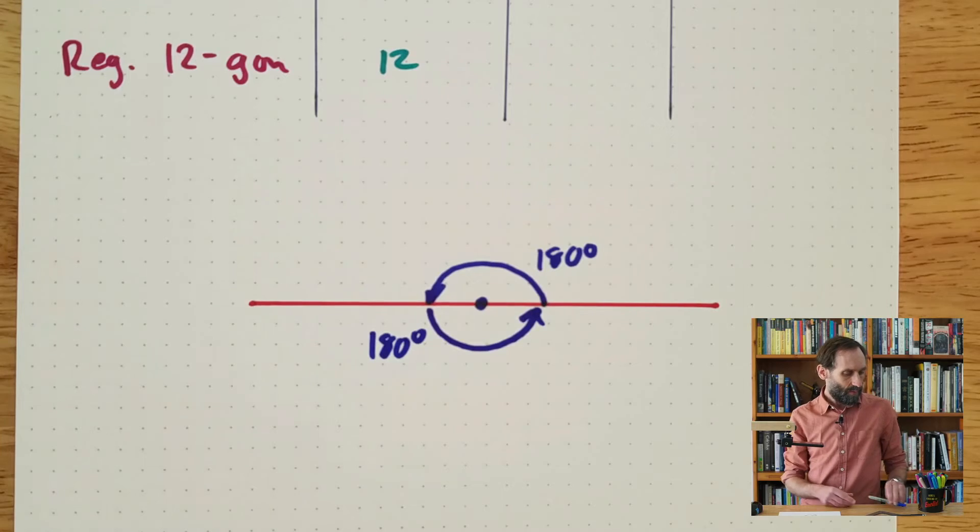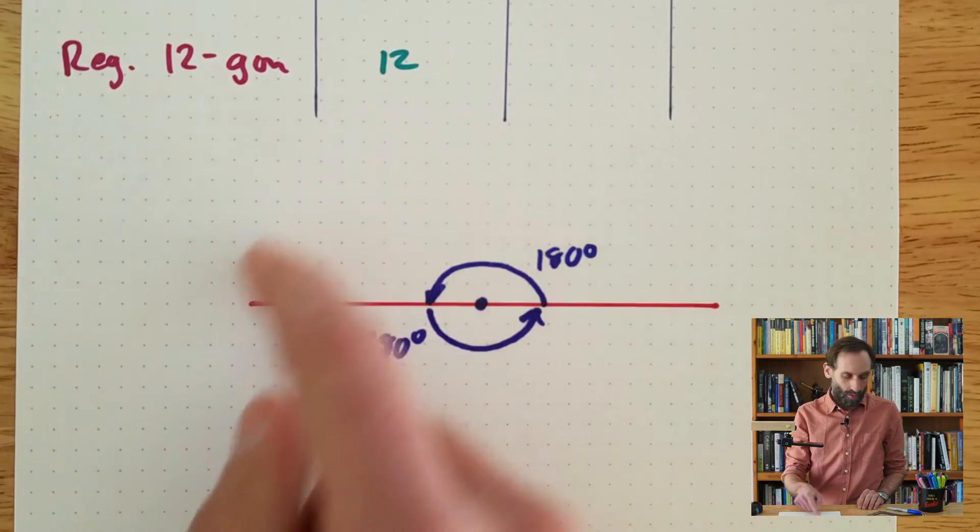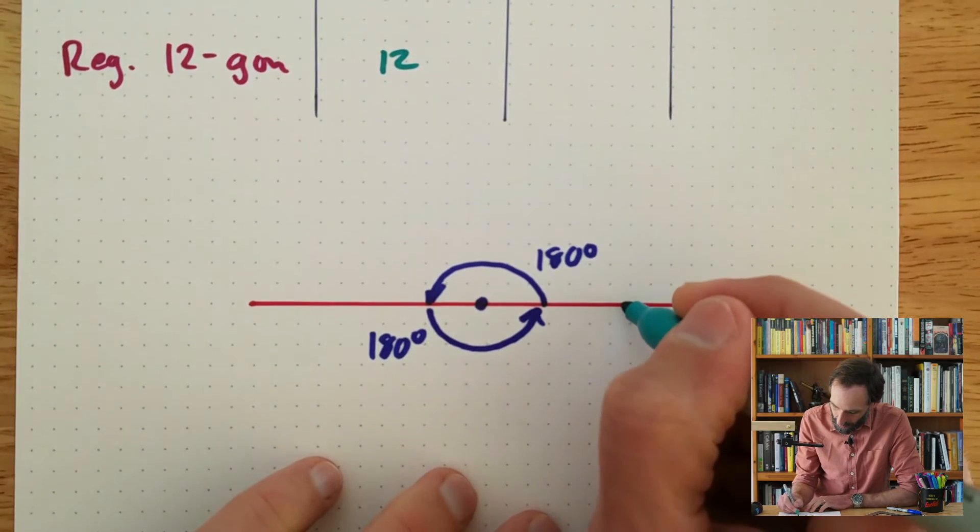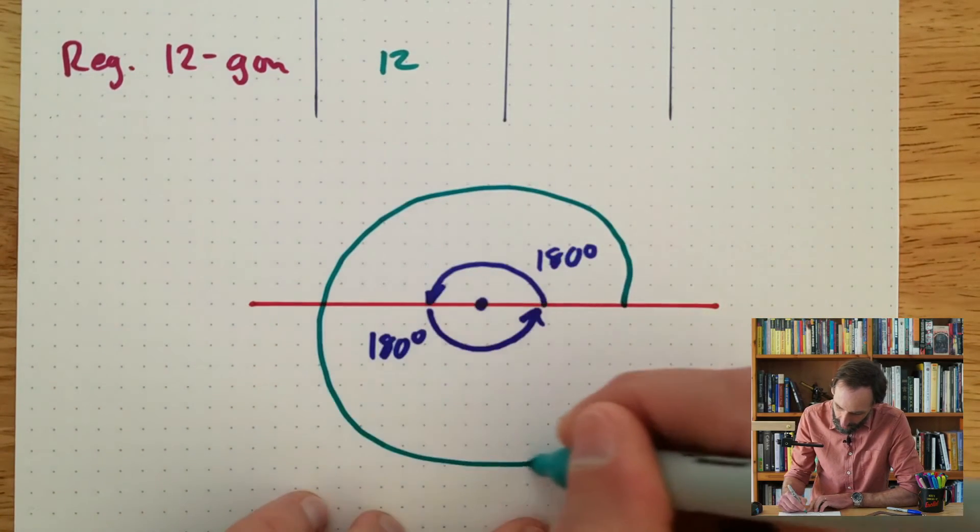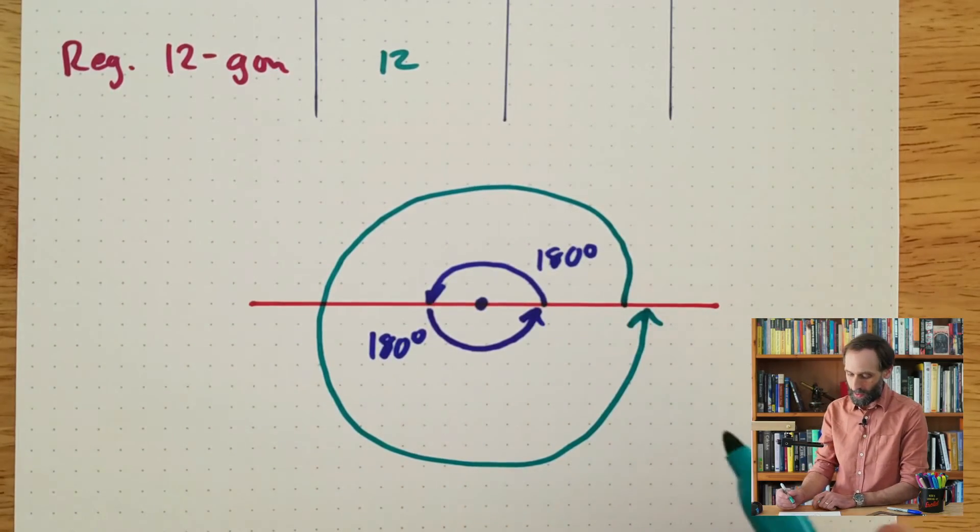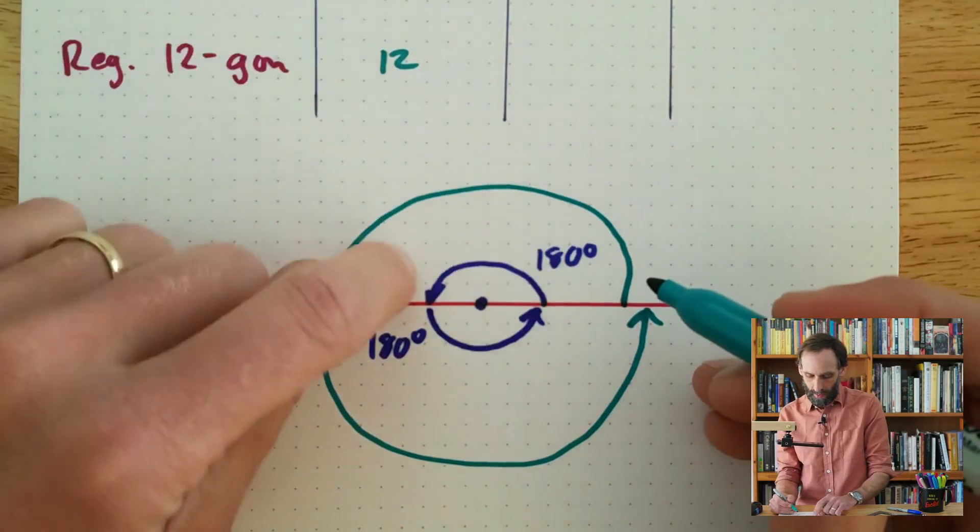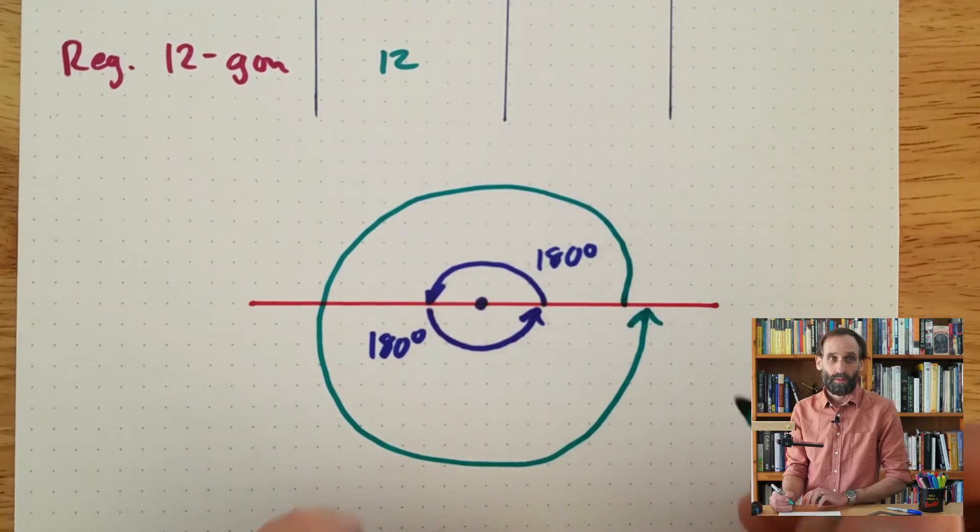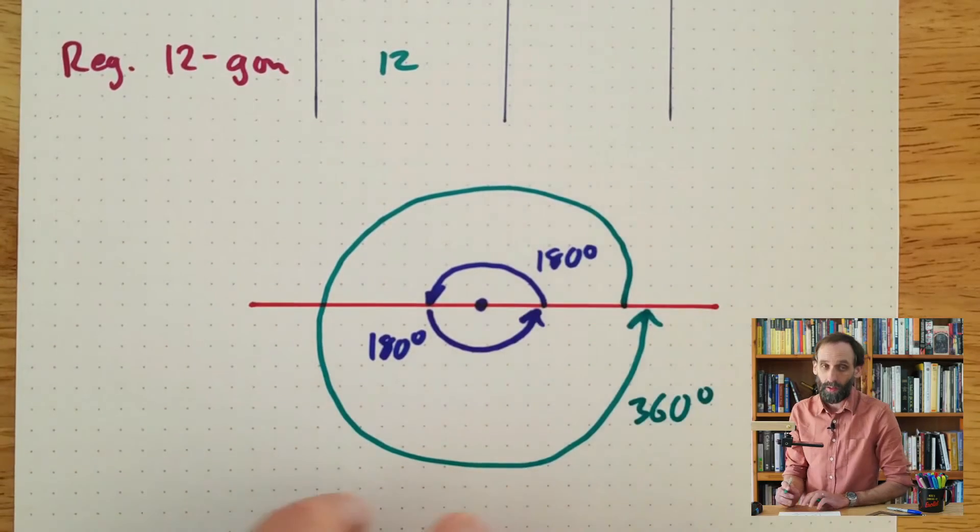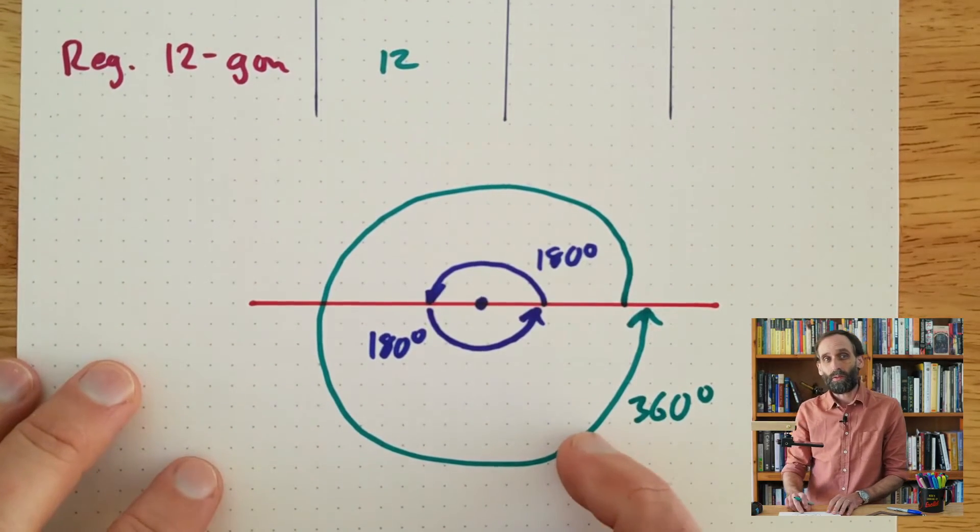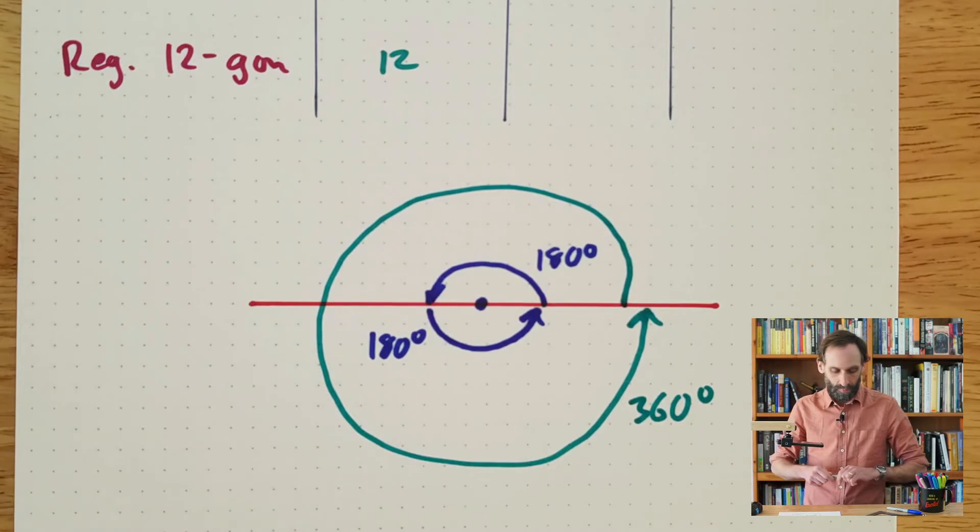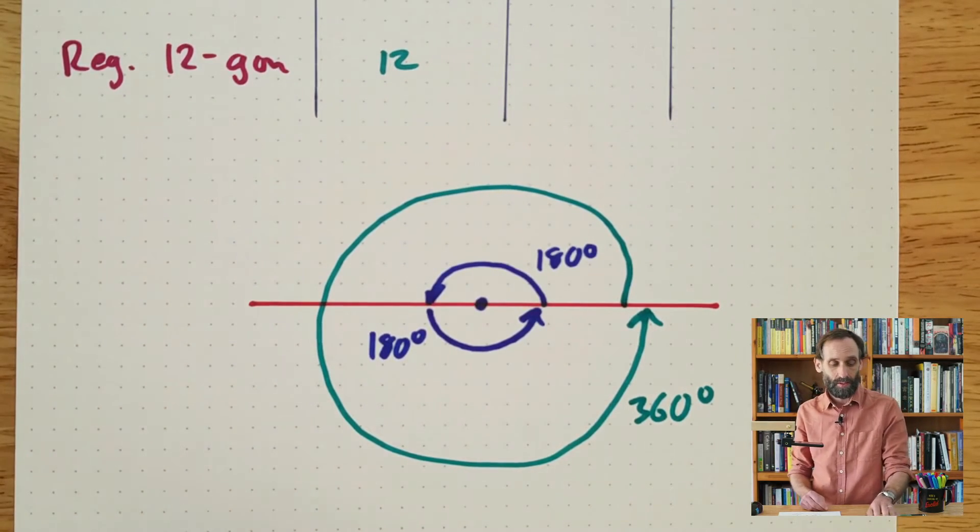So what is the angle measure of a full turn? If I were to start here, go all the way around and come back here, a full turn is 180 degrees plus 180 degrees. So the full turn is 360 degrees. That is also going to be useful in figuring out some of the things for this lesson.